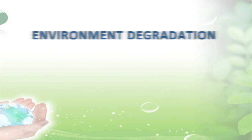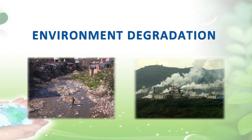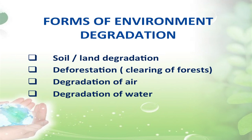Now, we will discuss forms of environment degradation. There are many types of degradation that can impact our environment, including soil or land degradation, deforestation, degradation of air, degradation of water, and slum conditions.